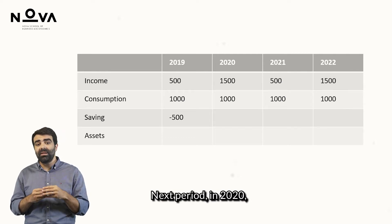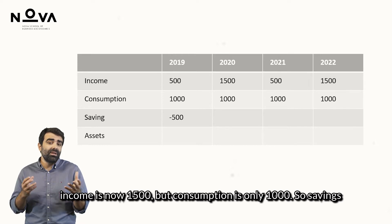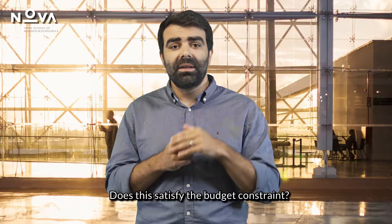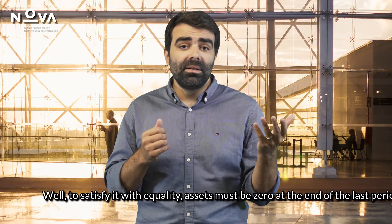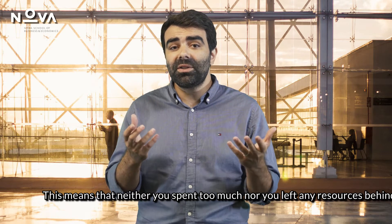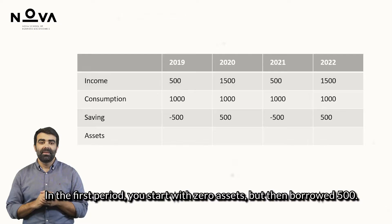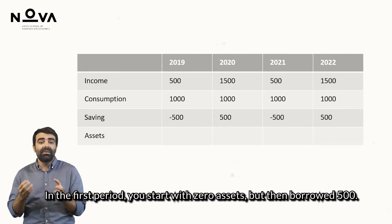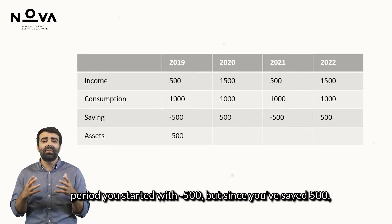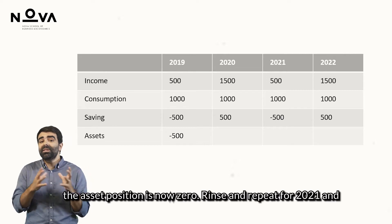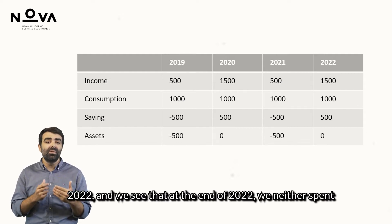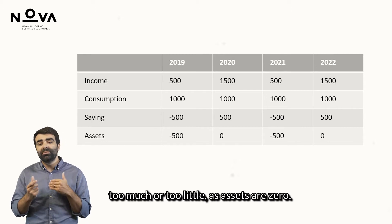Next period, in 2020, income is now 1500 but consumption is only 1000, so savings would equal plus 500. And the same for the next two periods. Does this satisfy the budget constraint? To satisfy it with equality, assets must be zero at the end of the last period — meaning neither you spent too much nor left any resources behind. In the first period, you start with zero assets but then borrowed 500, so the asset position at the end of 2019 is minus 500. The next period, you started with minus 500, but since you saved 500, the asset position is now zero. Repeating for 2021 and 2022, we see that at the end of 2022, assets are zero.